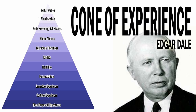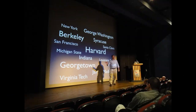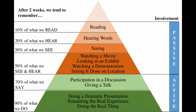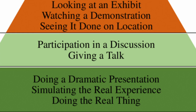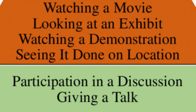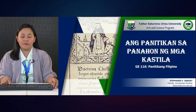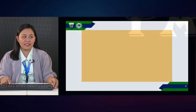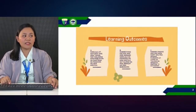Edgar Dale's Cone of Experience. Ever wonder why some things you learn stick in your brain forever while others vanish like smoke? It all comes down to how information is presented. Imagine a pyramid. The wider, hands-on experiences like doing or observing things are right at the base — the most memorable. Think learning to ride a bike; you never forget. As we climb the pyramid, things get more abstract. Demonstrations and visuals like pictures help bridge the gap. Lectures and readings are higher up, requiring more effort to retain information.